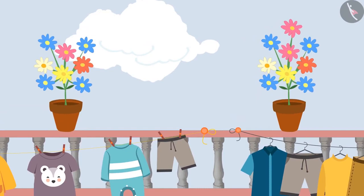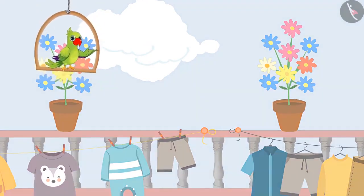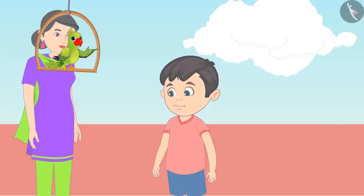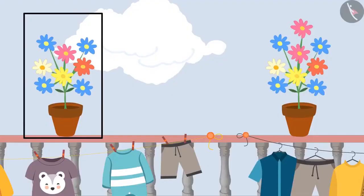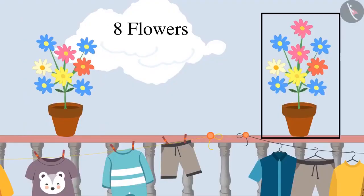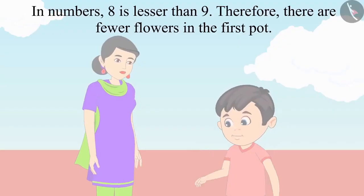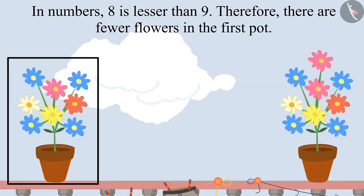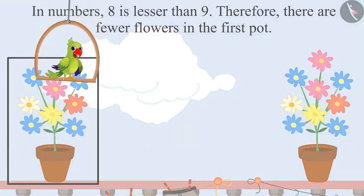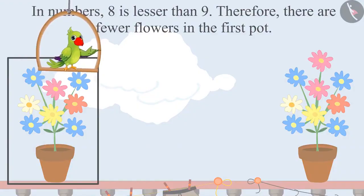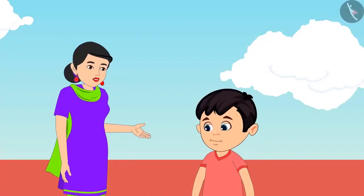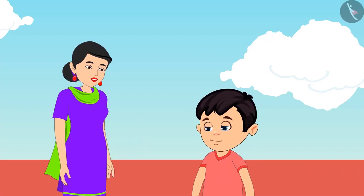Now which of these flower pots has fewer flowers? Chotu counts: there are eight flowers in one pot and nine flowers in the other. In numbers, eight is less than nine. Therefore, the first pot has fewer flowers. Was your answer also the same? Very good Chotu, once again you are correct.